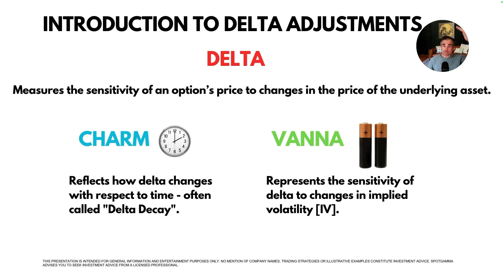Vanna relates to the sensitivity of Delta — or changes in Delta — to changes in implied volatility. Imagine the VIX going up or down; the VIX is a measure of implied volatility. So when the VIX goes up or down, it's telling you that the sensitivity — in other words, how much options will move relative to price — is changing as well.